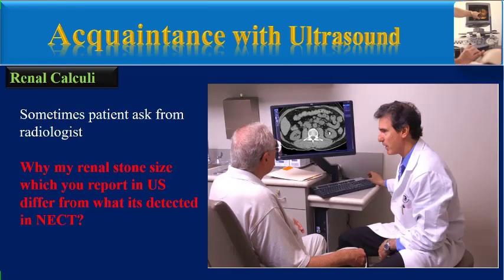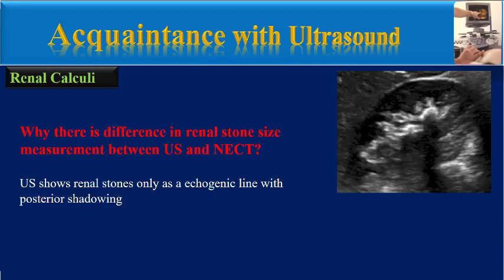Sometimes patients ask radiologists: why may renal stone size, which you reported in ultrasound, differ from what is detected in non-enhanced CT? Really, why is there a difference in renal stone size measurement between ultrasound and non-enhanced CT?